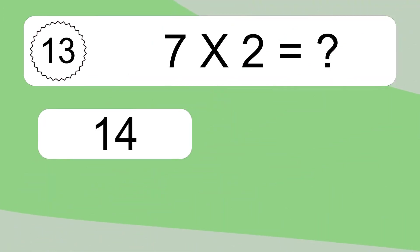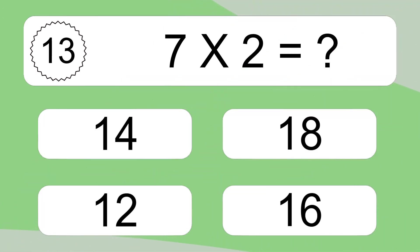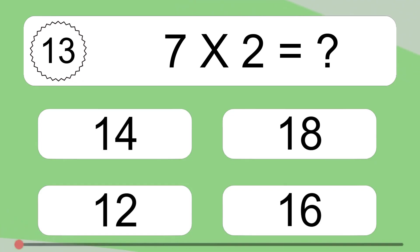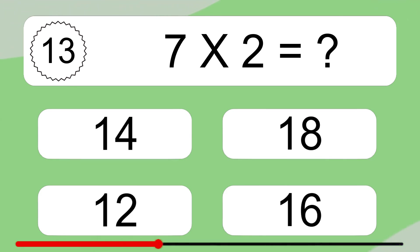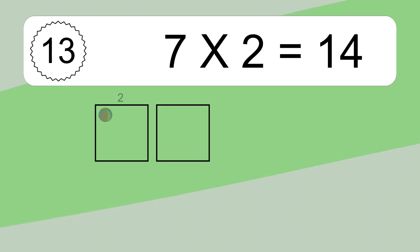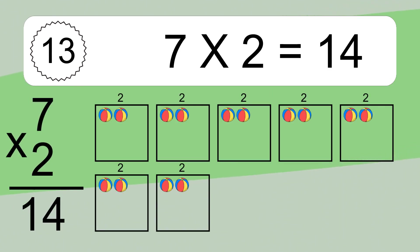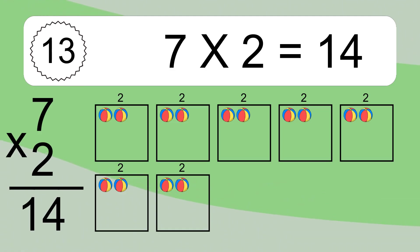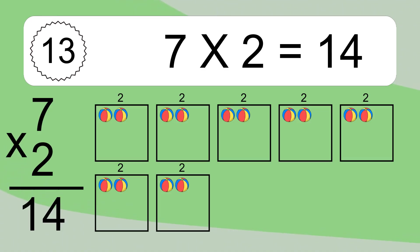Seven times two equals what? Seven times two equals 14. We have seven boxes, and each box has two colorful balls inside. If you count all the balls in all the boxes together, you will have seven times two balls. This equals 14 balls.